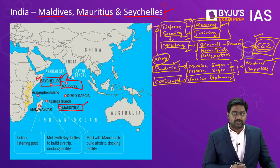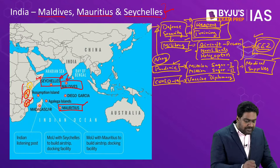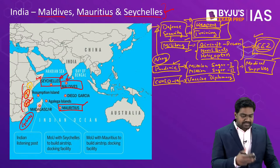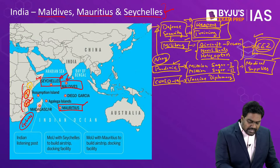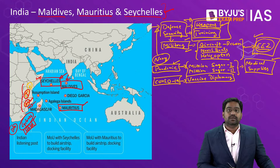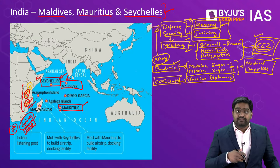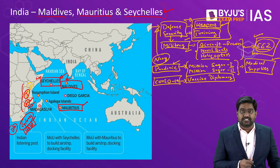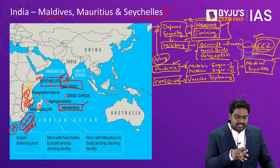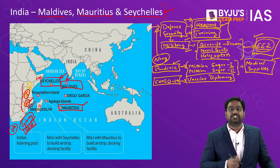Another example is the tropical cyclone that hit Mozambique and Tanzania recently — these East African countries are very vulnerable to tropical cyclones. When they are hit by disasters, India immediately rushes HADR — humanitarian assistance and disaster relief — to these countries. Even back in 2004, when Sri Lanka and Maldives were hit by the Indian Ocean tsunami, India supplied disaster management assistance to all these countries despite being affected itself. Since many years, India has retained its dominant position and been helping countries in the region.